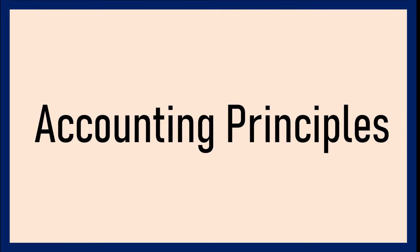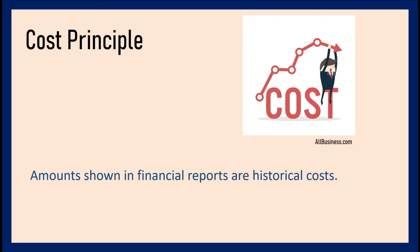The first accounting principle is the Cost Principle. Amounts shown in financial reports are at historical cost — meaning we record the amount at the time the transaction occurred. Even when you look at accounting reports from 2012, the amounts reflect what they were worth in 2012. We do not adjust for inflation, except for hyperinflation, which you'll study in higher accounting subjects.